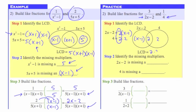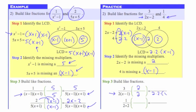2x minus 2 also has this factor of (x minus 1). And 4 also has another factor of 2. So now I just multiply all three of these factors together to get my LCD: 2 times 2 times (x minus 1). We'll go ahead and leave that factored. Now let's talk about the missing multipliers. For 2x minus 2, the only factor outside of that circle is this factor of 2. For 4, the only factor outside of that circle was (x minus 1).